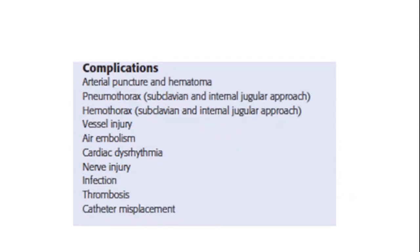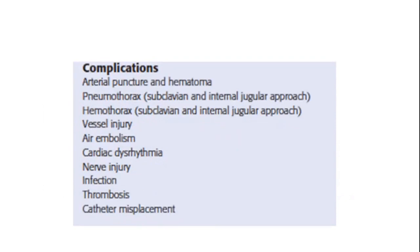Finally, complications — many to consider. Depending on approach, there may be higher risk for pneumothorax. Others include: air embolism, infection, cardiac dysrhythmia, nerve injury, thrombosis, catheter misplacement, and inadvertently puncturing the artery instead of the vein. When consenting the patient, these are the risks and benefits that should be discussed if the patient is able to be consented.